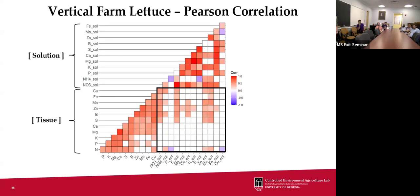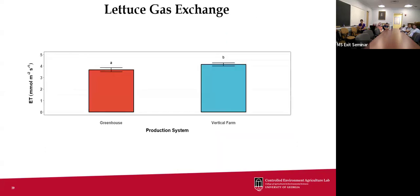For the vertical farm Pearson correlations, the trends were slightly different — there were more positive correlations between solution and tissue concentrations, especially for micronutrients. For calcium specifically, we did not see that negative inhibitory effect observed in the greenhouse. We thought this could be due to the increased airflow provided to vertical farm plants, which would increase transpiration and translocation of calcium. Indeed, looking at gas exchange data, plants in the vertical farm were transpiring significantly more water, which could explain that disparity between greenhouse and vertical farm results.